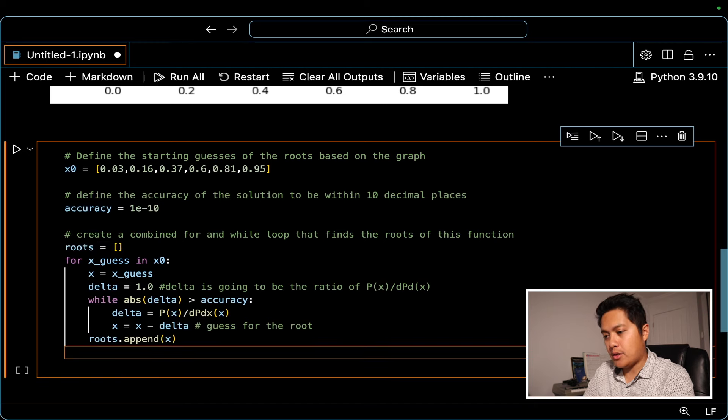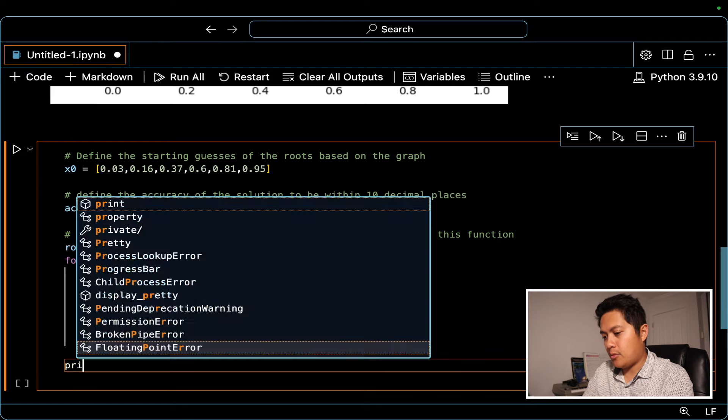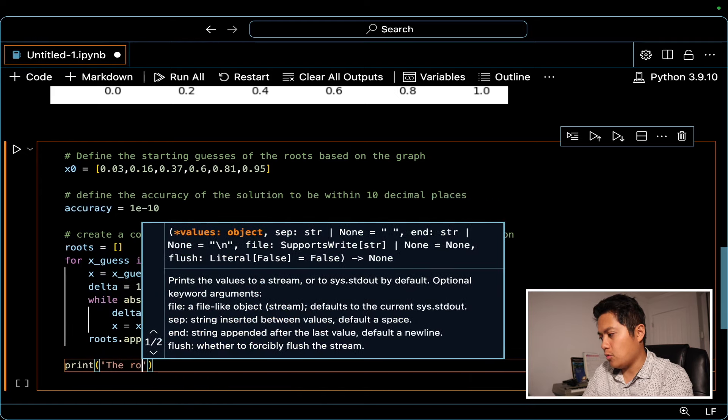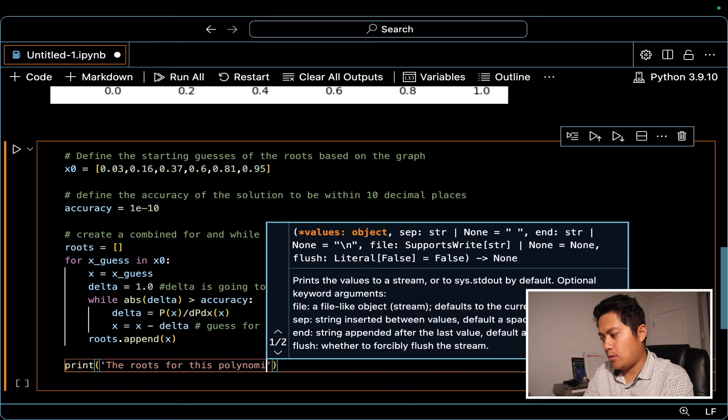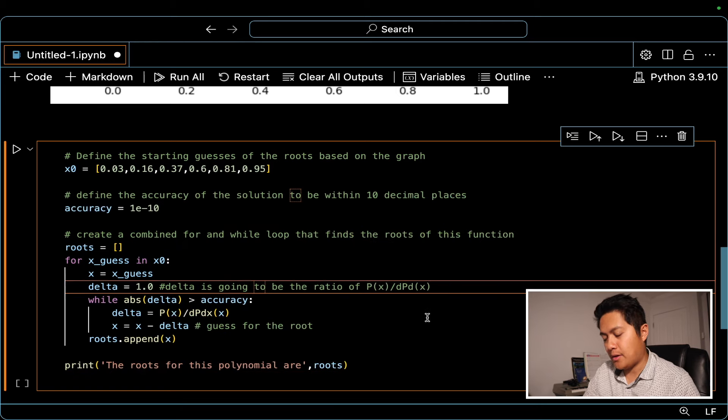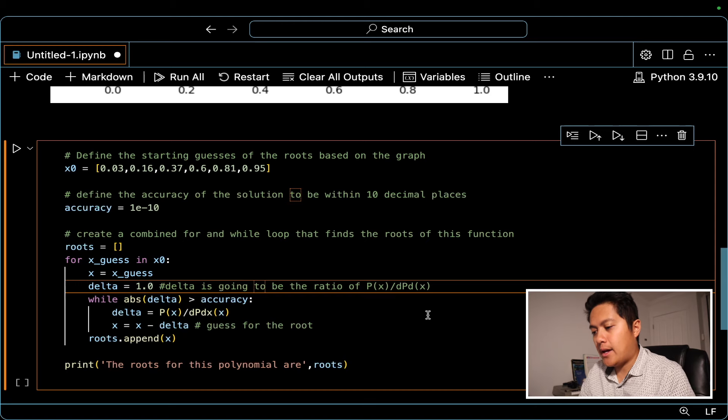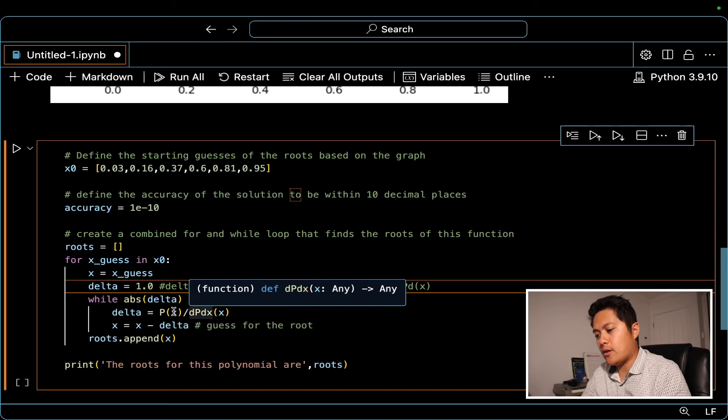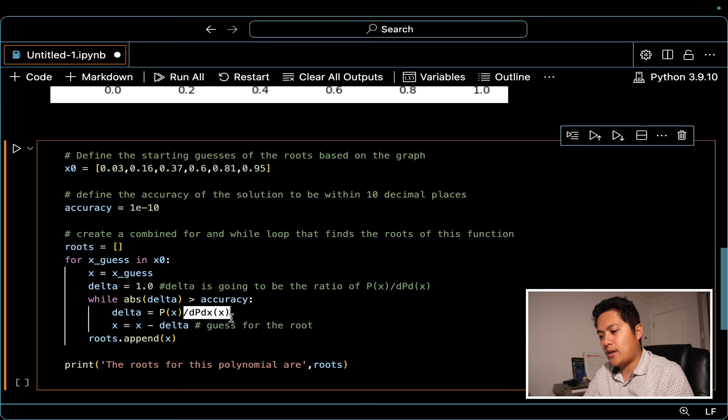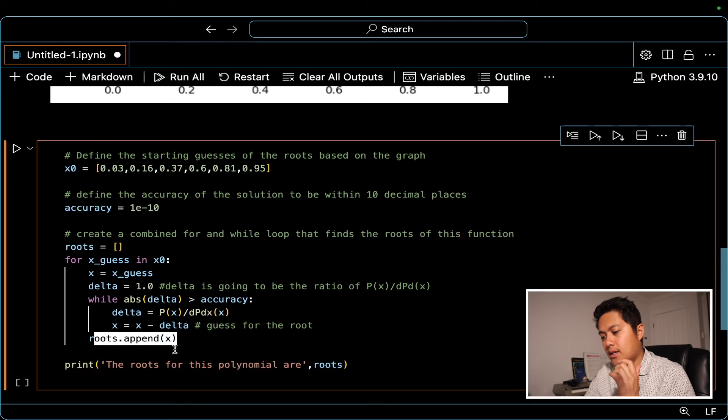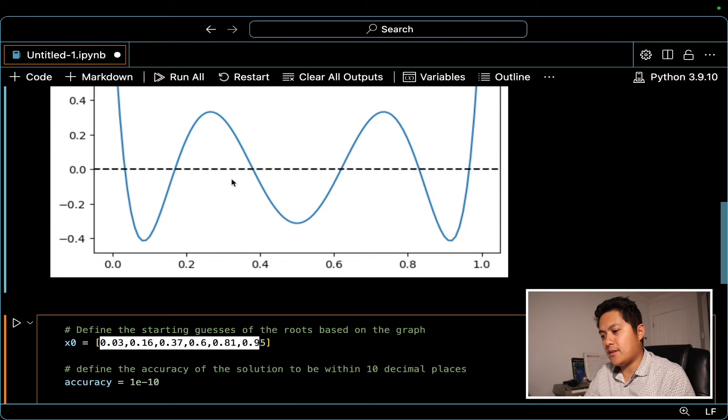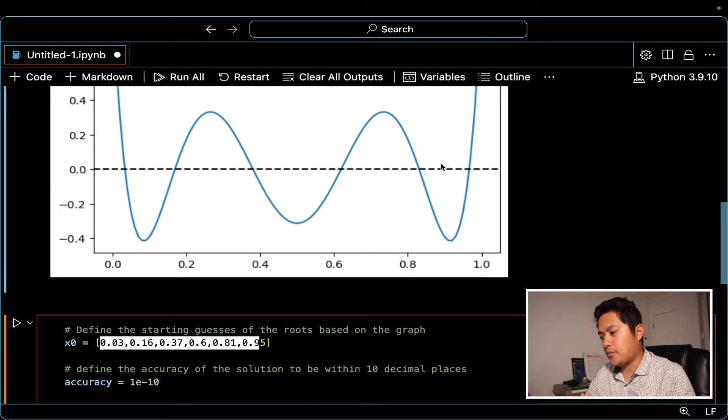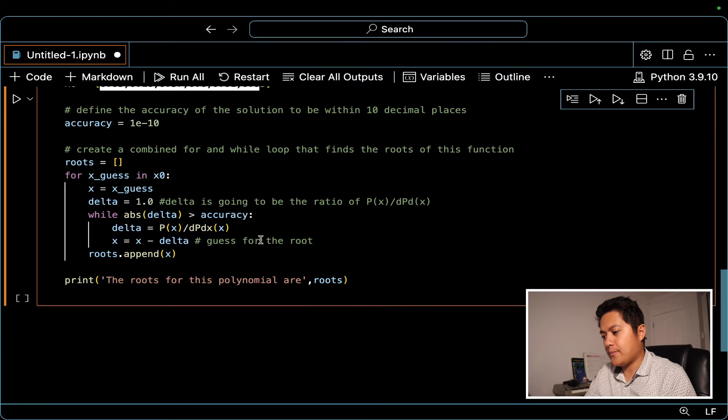And then what we're going to do here, I'll just say print the roots for this polynomial. So I think that will work. But again, we are just going to use this iterative approach, we're evaluating the function and its derivative at each guess. And we're just doing this iteration. And we're going to store the final answer after each iteration, we're going to go through each of these guesses to find the different zeros of this function. So we're going to run this.